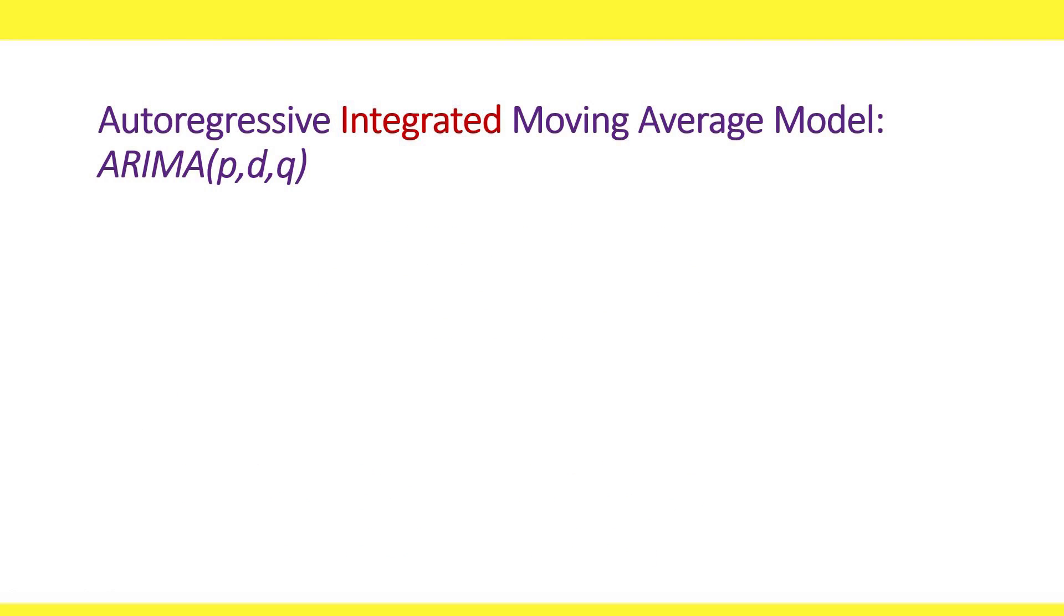The last step, which moves us from ARMA to ARIMA models, is adding a differencing step called INTEGRATE. Hence, the ARIMA model stands for autoregressive integrated moving average model. This differencing operator is exactly the one we saw earlier, which we use to remove trend and or seasonality.